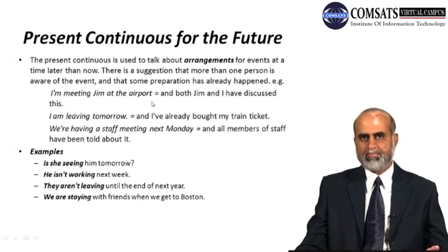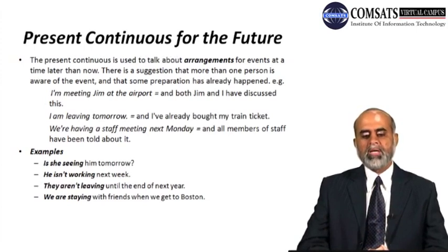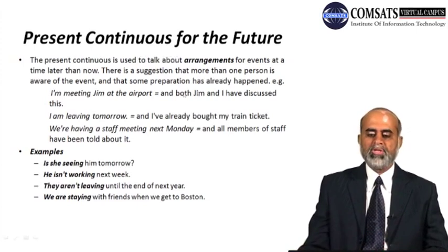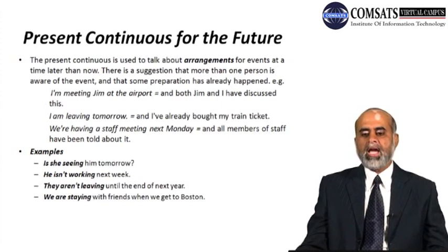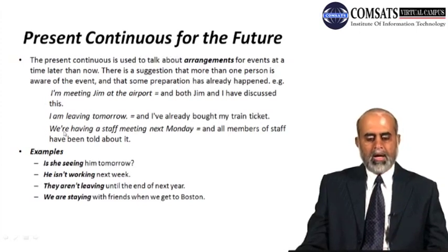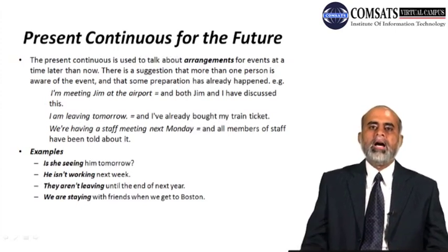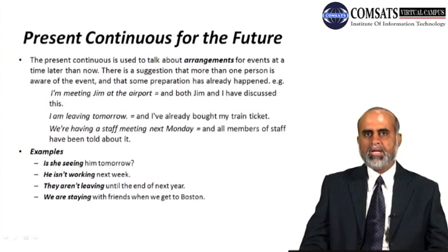For example: 'I'm meeting Jim at the airport' — this does not mean I'm meeting Jim now; I'm talking about the future. It means both Jim and I have discussed and arranged it, and both people are aware of it. Similarly: 'I'm leaving tomorrow' — this is an arrangement and I've already bought my train ticket, so some preparation has been made. 'We are having a staff meeting next Monday' — we have made some preparation and all members of staff have been told about it. When something is fixed, arranged, preparation has been done, and people have been informed, we can use present continuous tense.